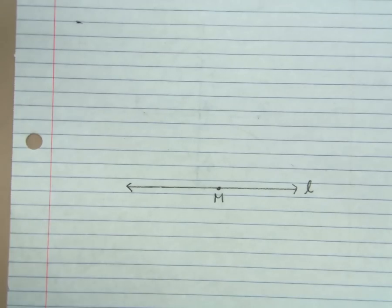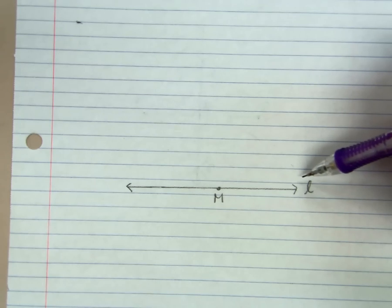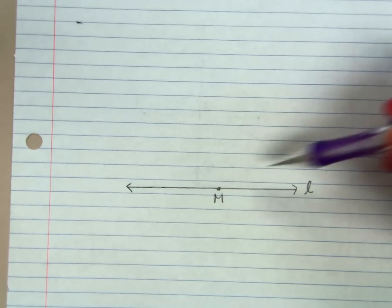This video is going to go over how to construct a perpendicular from a point on the line. So I have a line L and a point M, and I want to construct a perpendicular line to L through M.